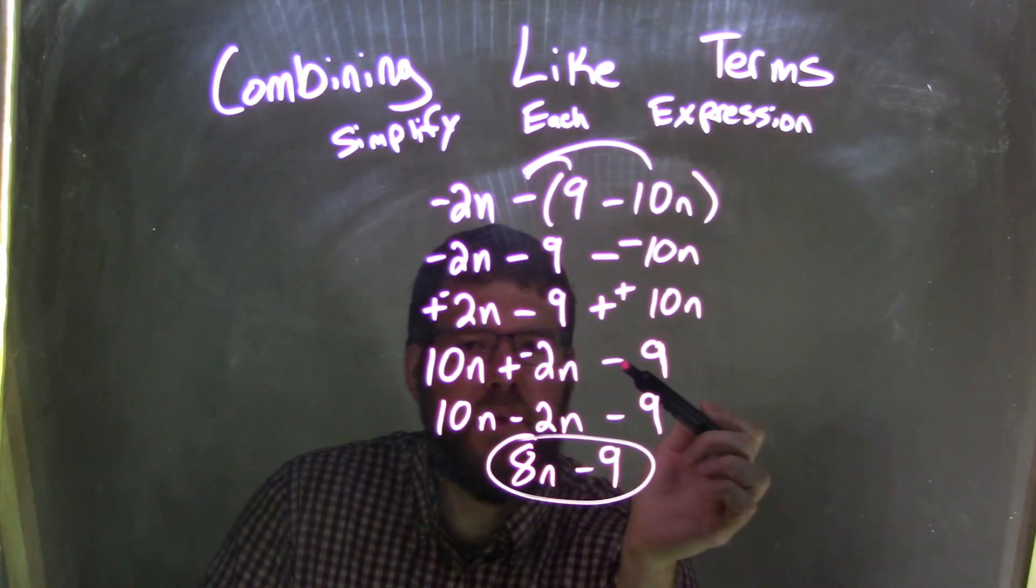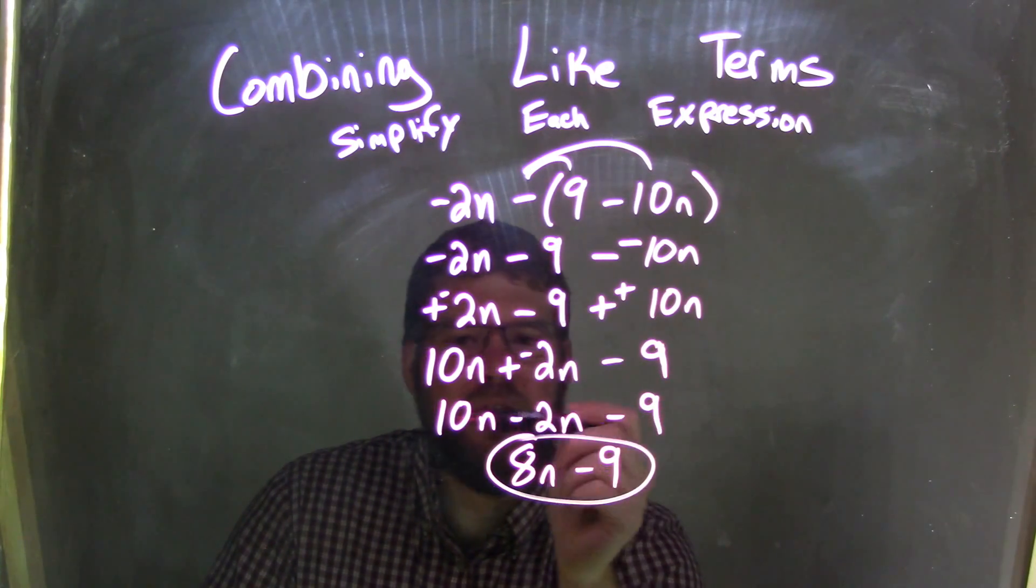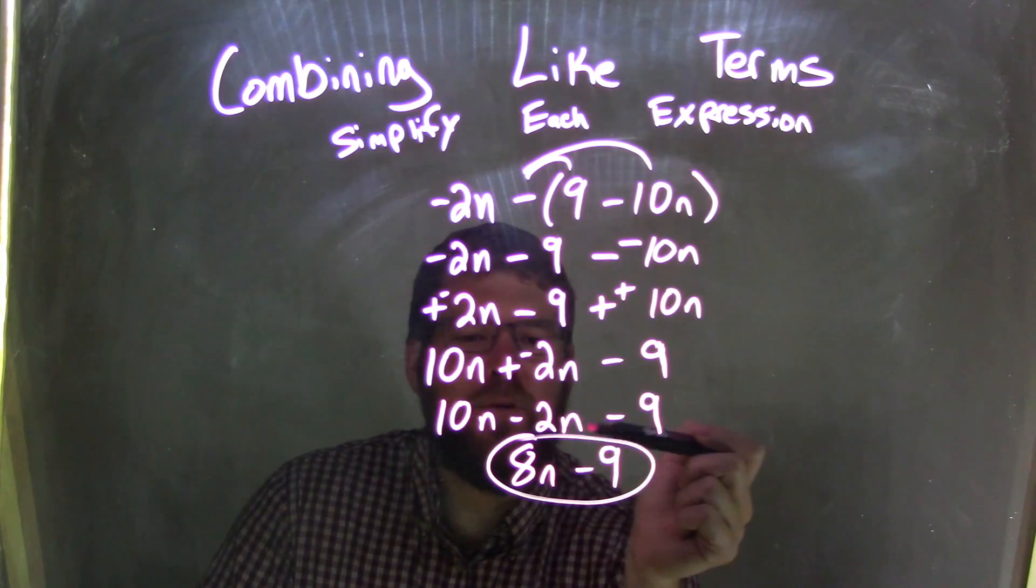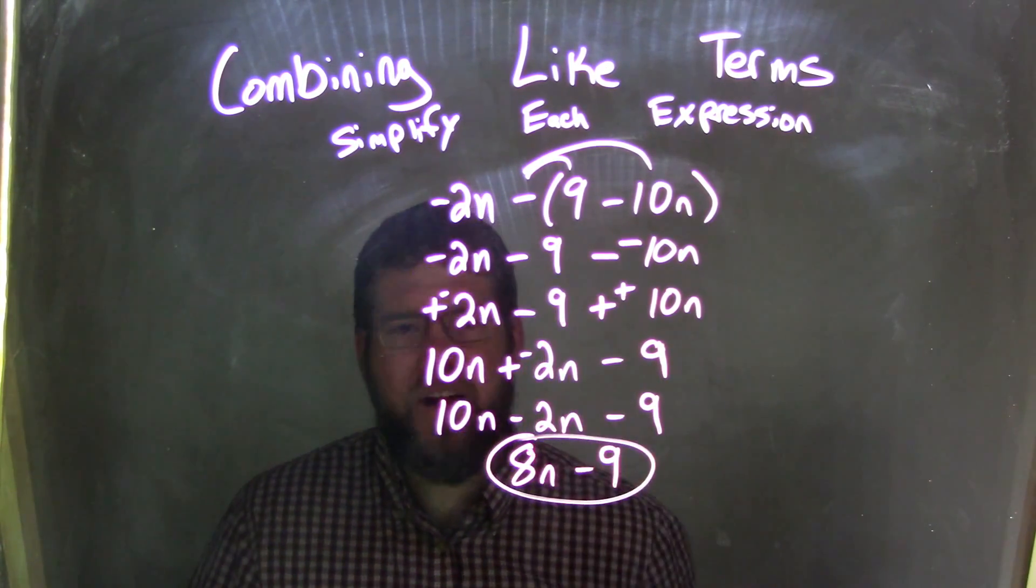I have all three parts here. Now that plus and negative is the same thing as subtraction, so we have 10n minus 2n minus 9. 10n minus 2n is just 8n, and that is our final answer.